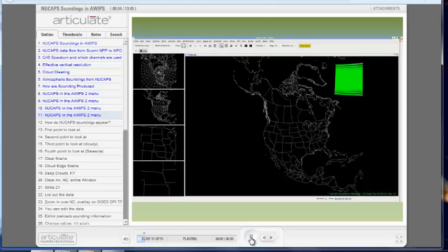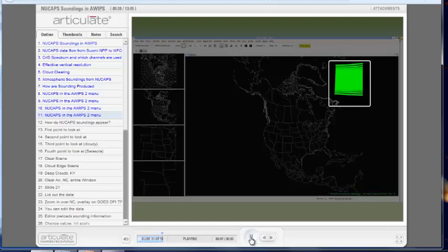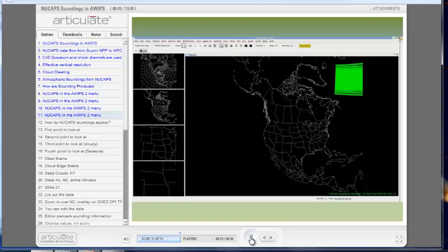Clicking on it will bring up the location of the latest NuCAP sounding points, which are denoted by green circles. Soundings are available at each of the green points. These are from a 1447 UTC pass, and note that the plot was done at 1635Z. The Suomi NPP pass after 1447 will be along the coast, just before 17Z, and will take about an hour for those points to show up in your AWIPS2 session.